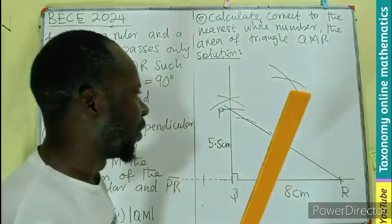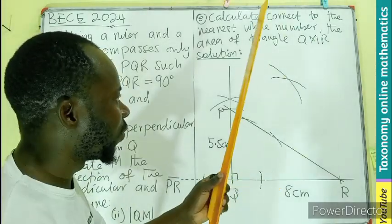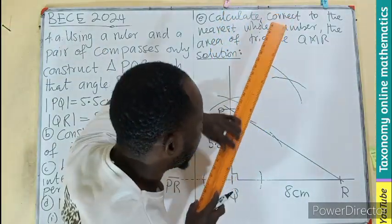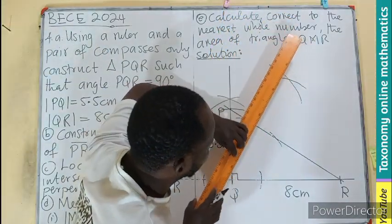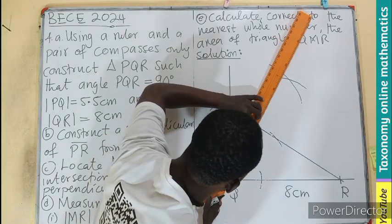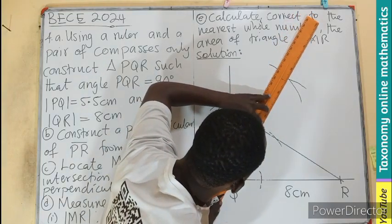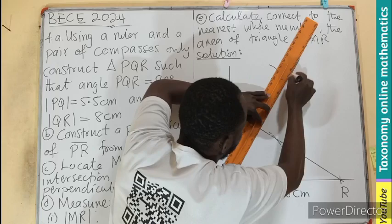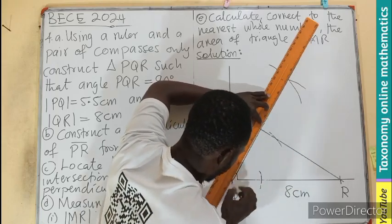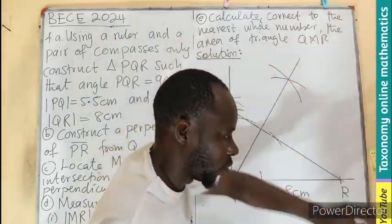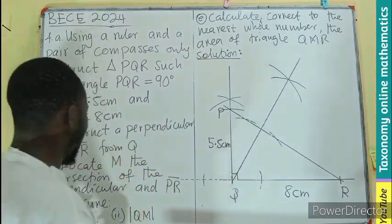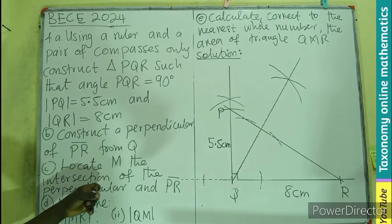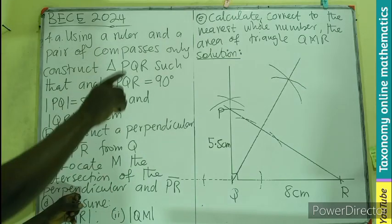This is the correction to what I did first. From reading many comments on Facebook, we can see that the first construction was a bisection, not a perpendicular line. Now with this correct perpendicular, we are going to locate M — the point of intersection of the perpendicular line drawn and PR.